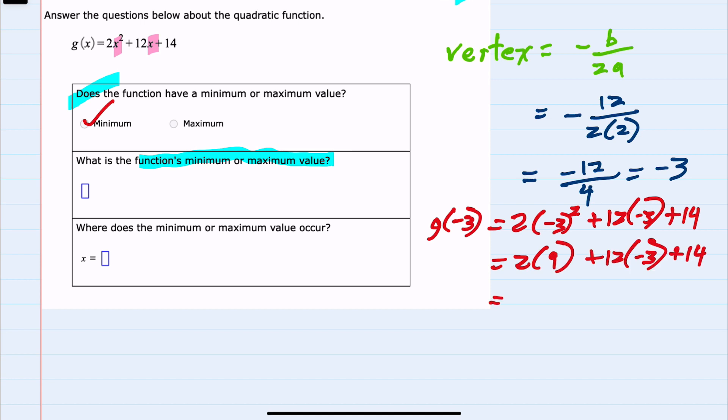From here we can simplify, starting with our exponents: (−3)² is 9. Then multiplication would give us 2 times 9 is 18. 12 times −3 is −36, and plus 14. 18 minus 36 is negative 18. Plus 14 gives us minus 4. So we have found the function's minimum value: it's negative 4.